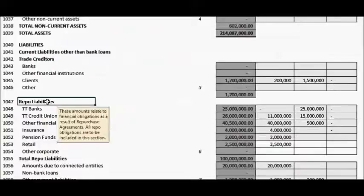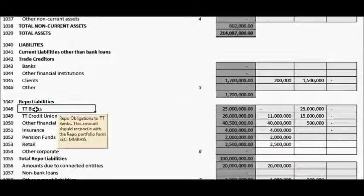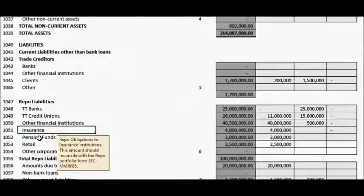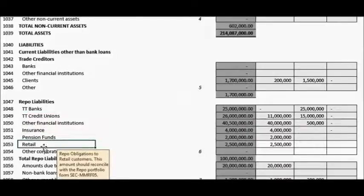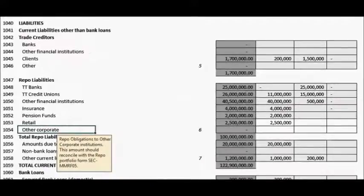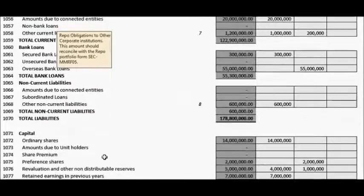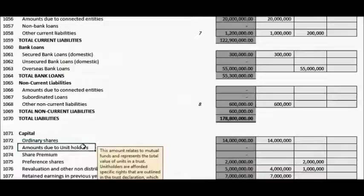A repo liability section has been included to capture the total value of the reporting entity's repo liabilities, broken down into the various categories of investors such as TT banks, TT credit unions, insurance companies, pension plans, retail clients, and other corporate clients. An amount due to unit holders line item has been included to capture the total value of units held within a CIS which has been constituted via a trust. This line item must be completed by all CIS.